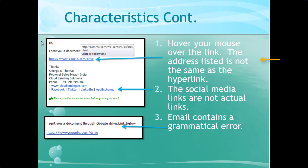We talked about verifying links. This one looks like it's going to Google Drive, but when I hovered over it, I could see it's not going to Google at all — it's going to a WordPress site. Anytime you see wp-content, that usually means it's a WordPress site. We talked about hovering over your mouse. And here you can see the social media links — if you hover over them, they were empty, just there to make it look like a real email. The email also contains a grammatical error: 'Google space drive dot capital link.'